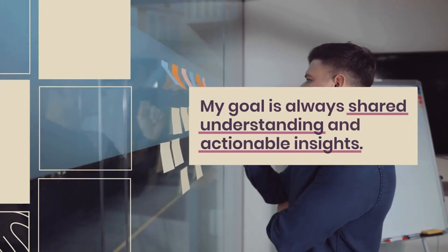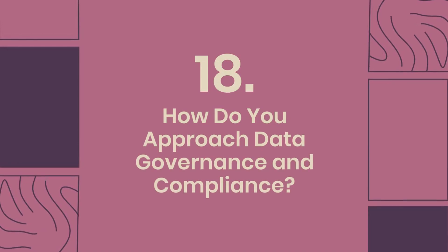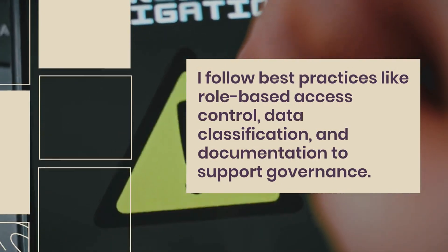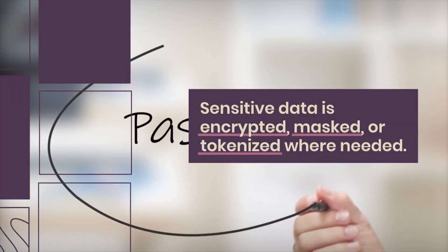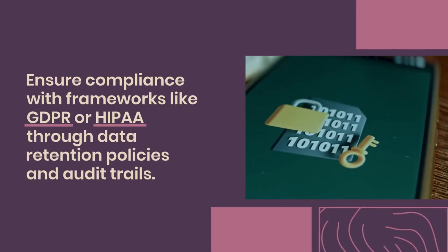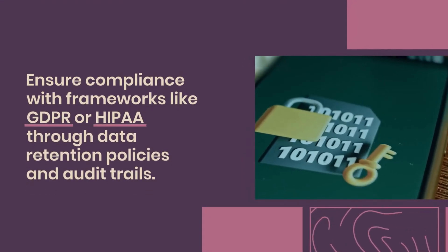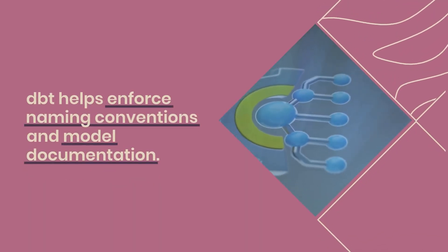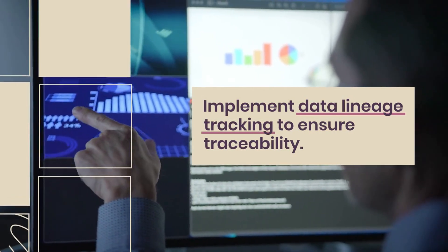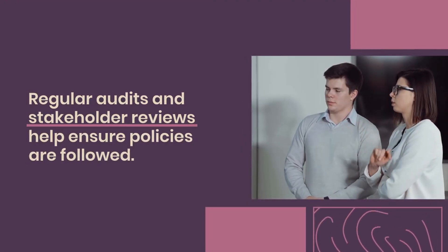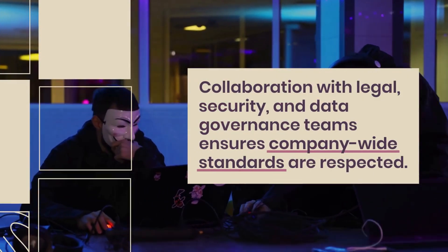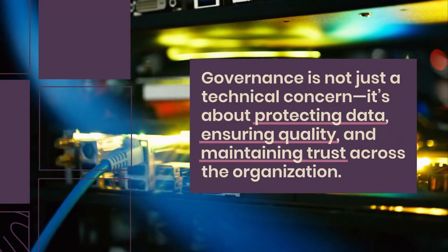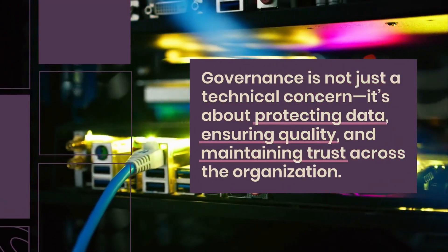Question 18: How do you approach data governance and compliance? I follow best practices like role-based access control, data classification, and documentation to support governance. Sensitive data is encrypted, masked, or tokenized where needed. I ensure compliance with frameworks like GDPR or HIPAA through data retention policies and audit trails. DBT helps enforce naming conventions and model documentation. I also implement data lineage tracking to ensure traceability. Regular audits and stakeholder reviews help ensure policies are followed. Collaboration with legal, security, and data governance teams ensures company-wide standards are respected. Governance is not just a technical concern — it's about protecting data, ensuring quality, and maintaining trust across the organization.